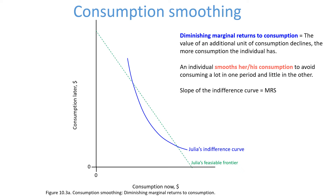The question now is: how much will Julia consume? She's going to both check what's feasible for her — what choices she has — and her preferences.